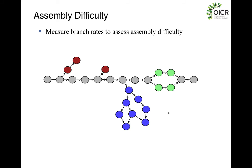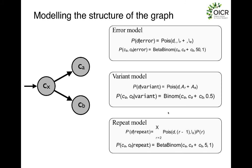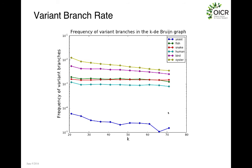Once we have the coverage, we want to take these different branch parameters and assess how difficult our assembly would be, based on different models — error modeling, variant modeling, and repeat modeling. These are all mathematical models that Jared built. For variant branch rate, the program tries to tell you, for different k-mer lengths, how frequently variant branches in the de Bruijn graph occur. If you have higher heterozygosity, more variant branches make it more difficult to assemble the genome.